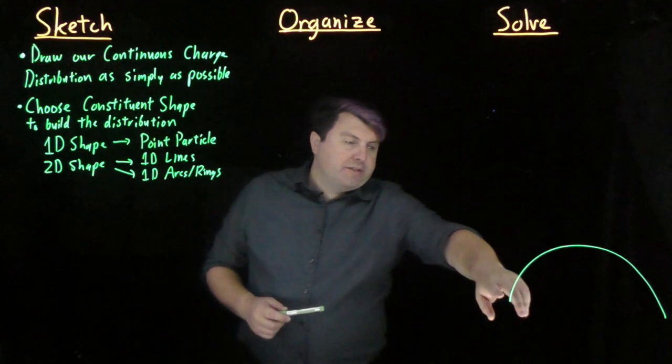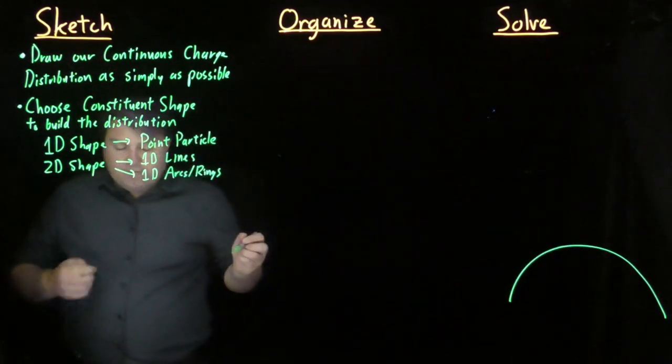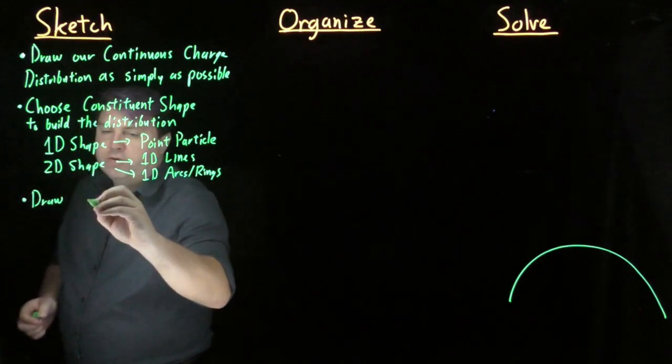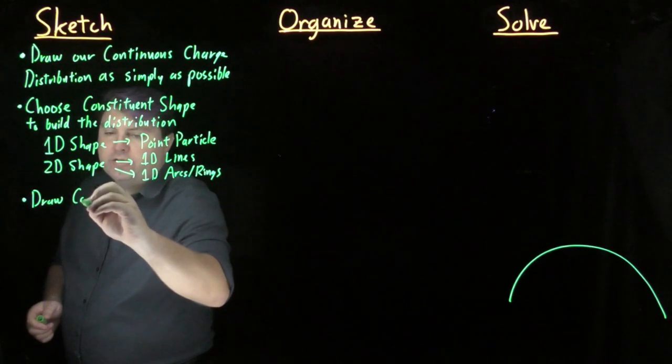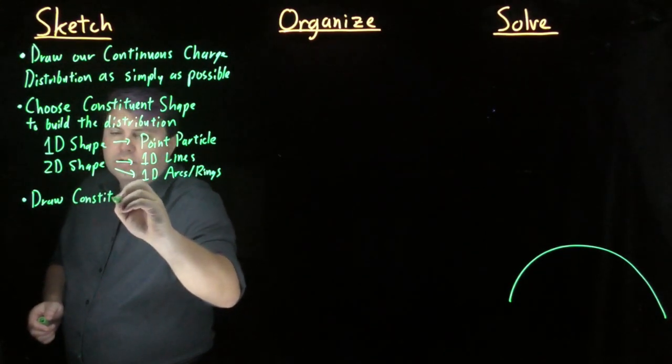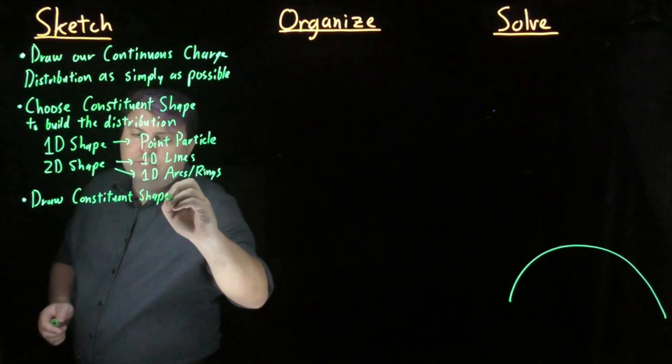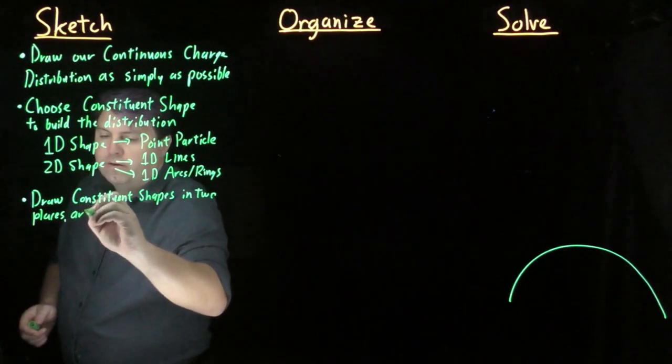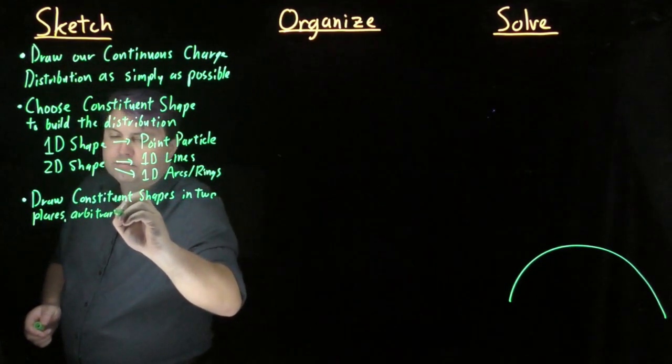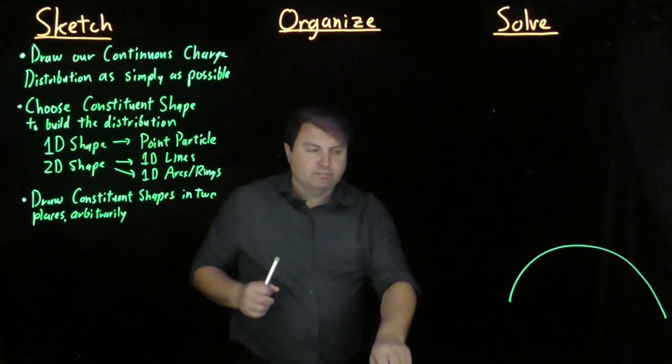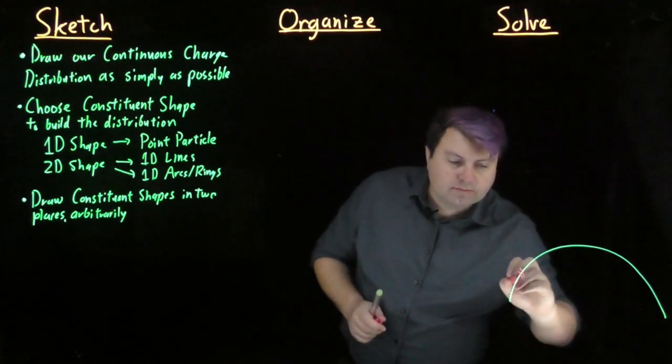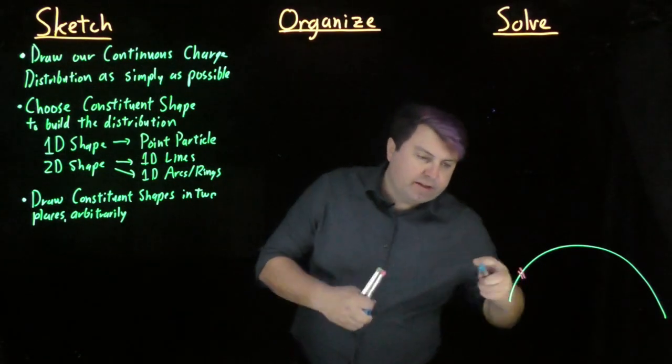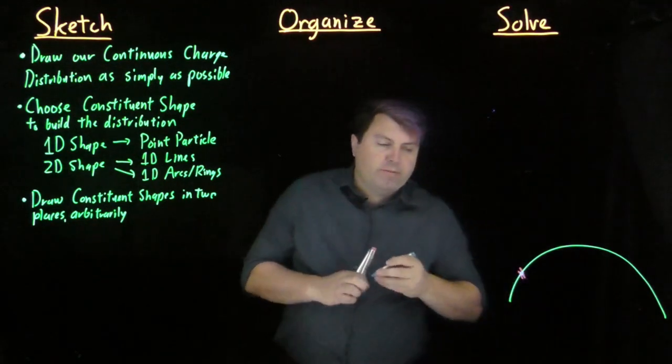We are going to build this out of zero-dimensional point particles, and how we do this is we draw the constituent shapes in two places arbitrarily. For this, I can say that I'm slicing here and I'm slicing here, and everything inside of this is pretty much a point particle.